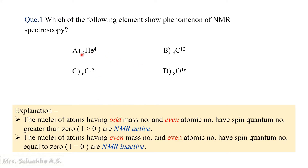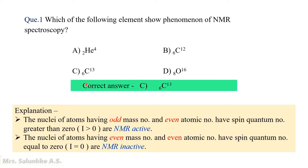In the above options, options A, B, and D have atoms with even mass number and even atomic number, so their nuclei are non-magnetic and do not show NMR. While in the case of 6C30, it has even atomic number and odd mass number, so its spin quantum number is greater than 0, making it magnetic and NMR active.